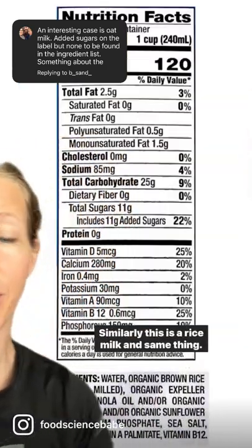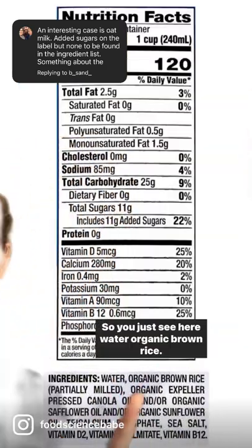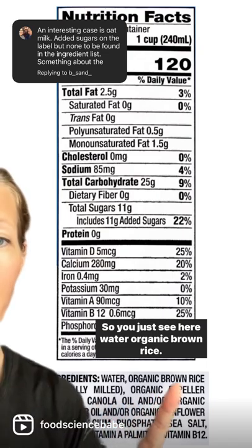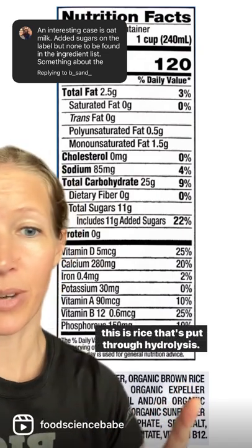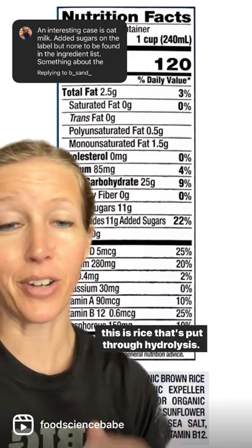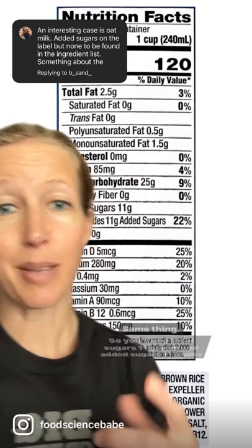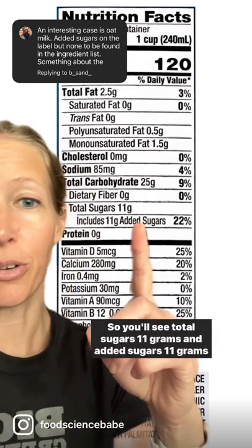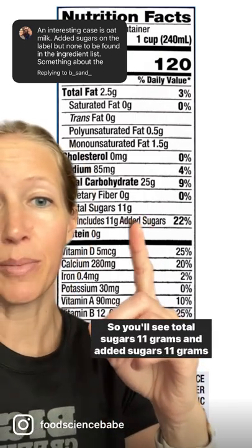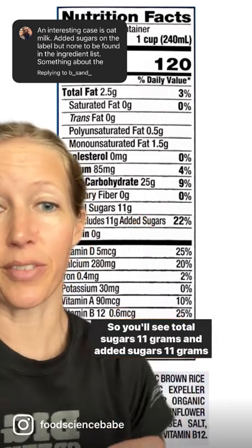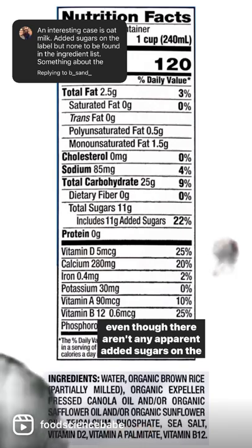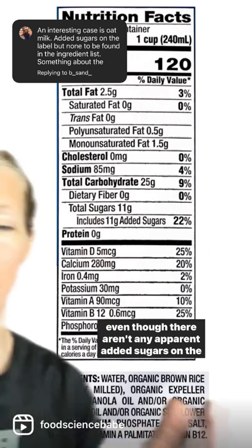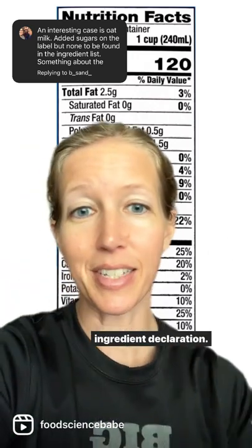Similarly, this is a rice milk and same thing. You just see here water and organic brown rice. This is rice that's put through hydrolysis. Same thing — you'll see total sugars 11 grams and added sugars 11 grams, even though there aren't any apparent added sugars on the ingredient declaration.